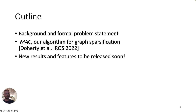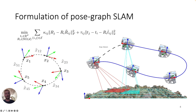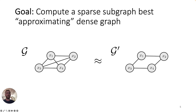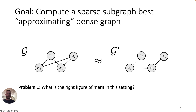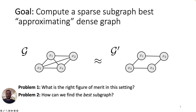The application area of interest is Pose Graph SLAM, where we want to estimate a set of robot poses from noisy measurements of their pairwise relative transforms. This corresponds to an optimization problem parameterized by a graph whose nodes are robot poses and whose edges are relative pose measurements — a minimization over rotations and translations that penalizes deviation from pairwise relative poses. The general idea is to design a sparse subgraph that best approximates the original dense graph, raising natural questions about the appropriate figure of merit and how to find the best subgraph.